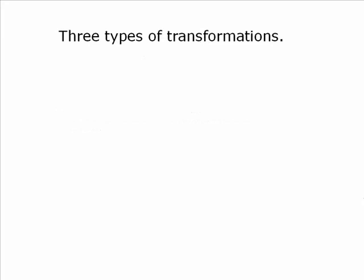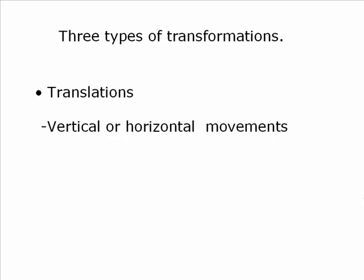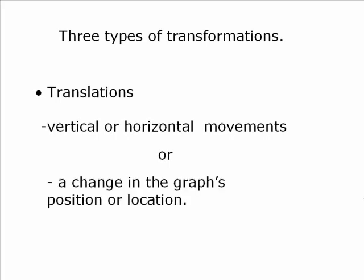There's three major types of transformations. We get translations. Now you would have covered these in 20 pure, in one form or the other, but these are basically just a vertical or a horizontal movement where you pick up the graph and you move it to the left, you move it to the right, you move it up, or you move it down. Another way to look at it is it's just a change in the graph's position or location. You're not changing the shape of it or the size of it or even the direction that it faces. You're simply moving it, picking it up and moving it.